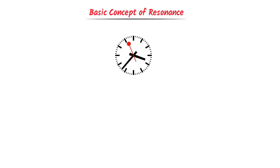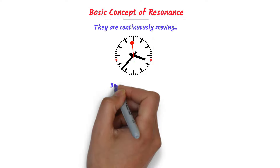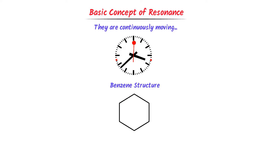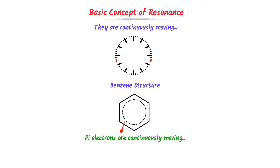Consider this clock. We all know that the hands of this clock are continuously moving inside the clock. We cannot say that hands of the clock are at a fixed position — rather they are continuously moving. Similarly, consider this benzene structure. Just like hands of the clock, pi electrons are continuously moving inside this benzene structure. This shifting of pi electrons inside benzene structure is known as resonance.